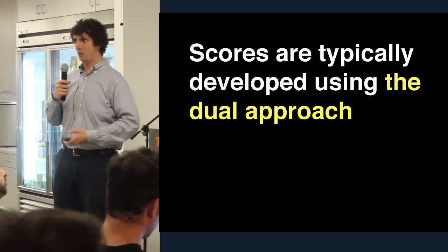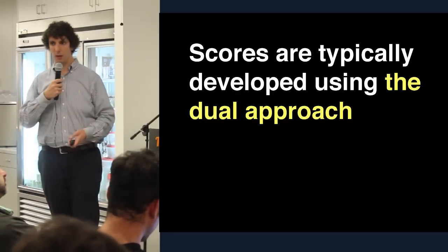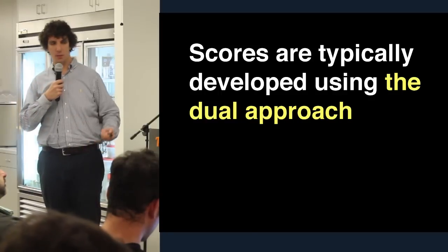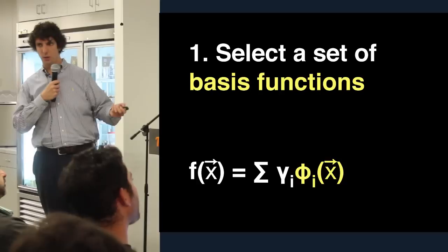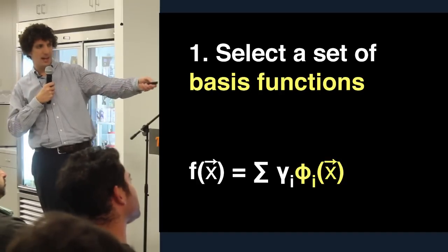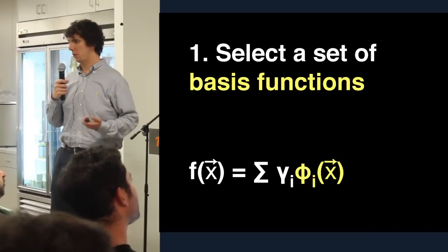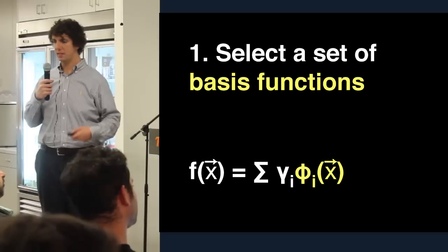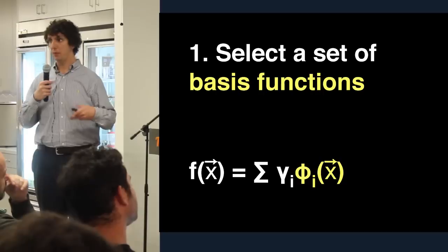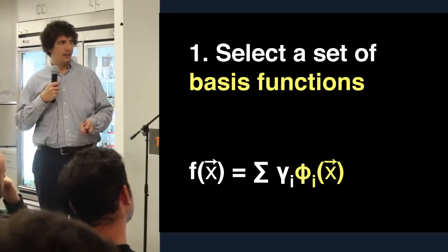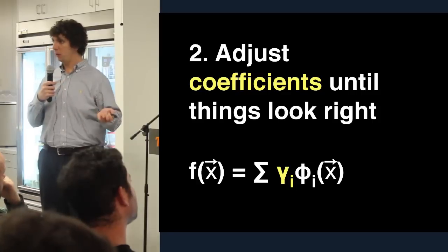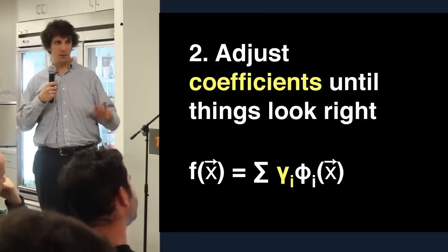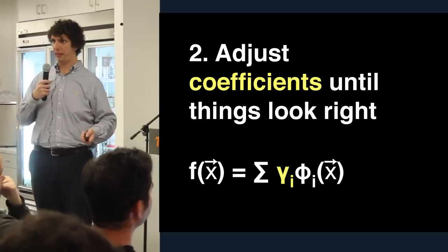Say you sat down today and wanted to make a scoring function. Right now, you would use the dual approach — I'll use terminology from linear programming. In the dual approach, you start by selecting a set of basis functions, the phi i's. If we were rebuilding WalkScore, we might want a radial drop-off function for distance away from a school or a grocery store. The expert thinks these up, then twiddles with the coefficients associated with these functions until things look more or less correct.